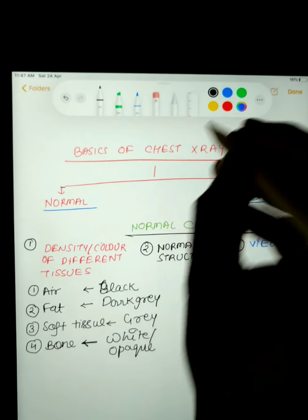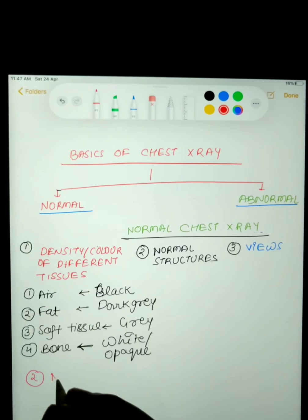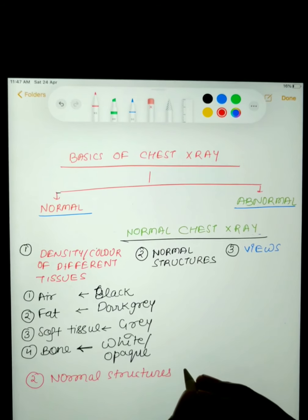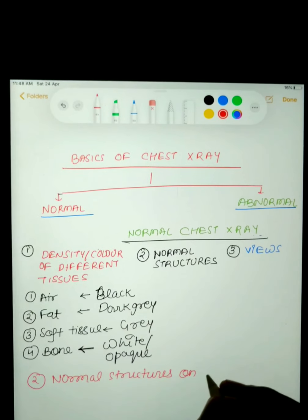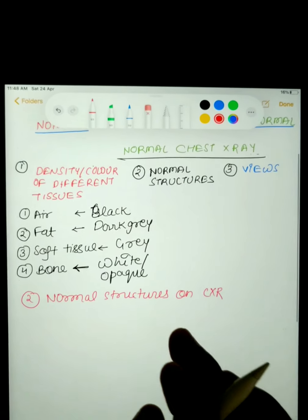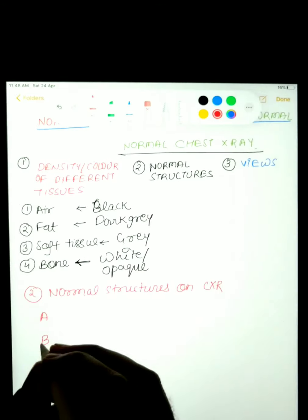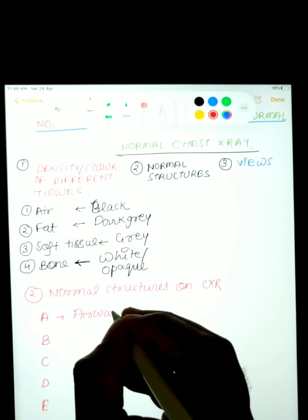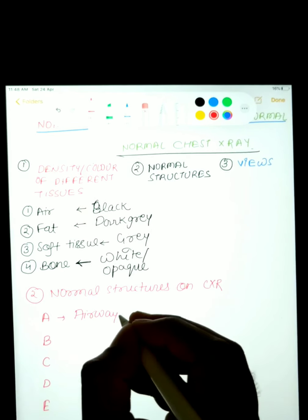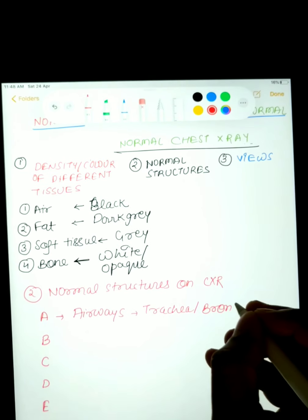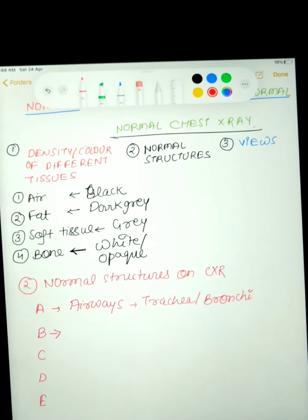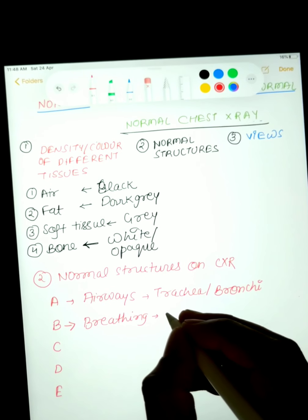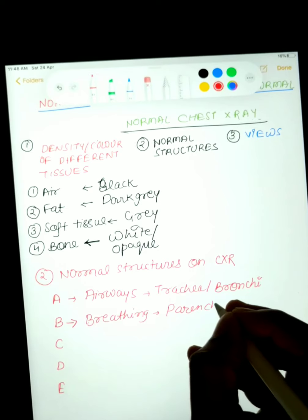Now, what are the normal structures you will see on a chest X-ray? You can learn them by the mnemonic A, B, C, D, and E. A stands for airways, and B stands for breathing — represented by the lung parenchyma.